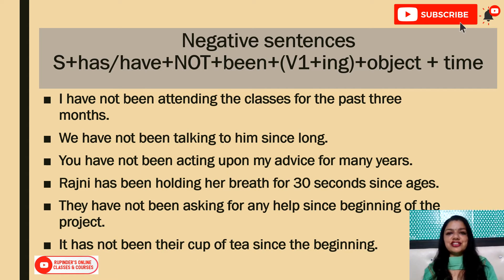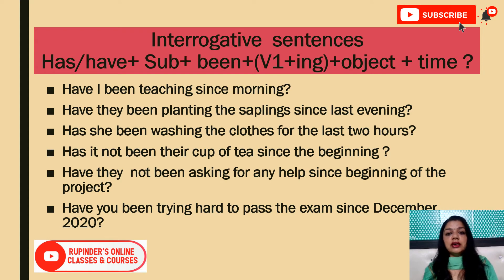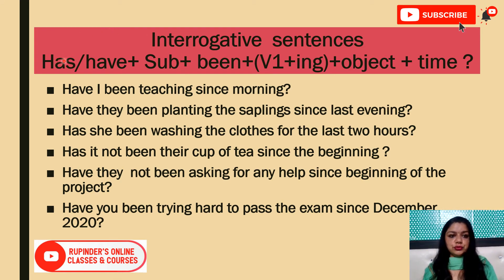Let's have a look at the interrogative sentences. In interrogative sentences, the helping verb 'has' or 'have' comes to the front. The subject moves inward, and 'been' follows after the subject. The structure is: Has/Have + Subject + been + V1-ing + object + time + question mark?